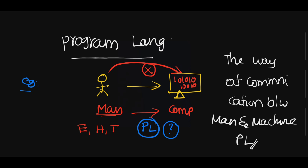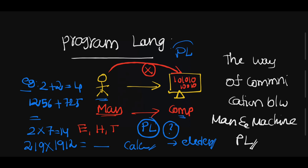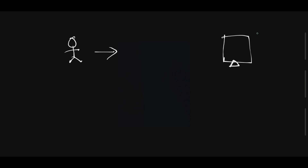For example, to calculate two plus two we can easily do it ourselves, but if you want to calculate something like 1256 plus 725, we need some time. Similarly, 219 into 1912 takes time, so in that case we use a calculator. A calculator is an electronic device that has some kind of programming inside it. Similarly, if a person wants to communicate with a computer, we need a programming language. The person must learn one programming language — maybe C, C++, Java, or Python.